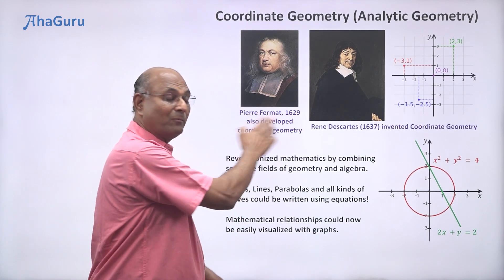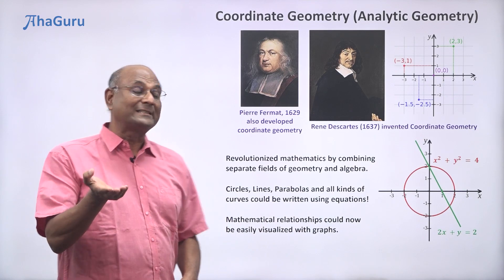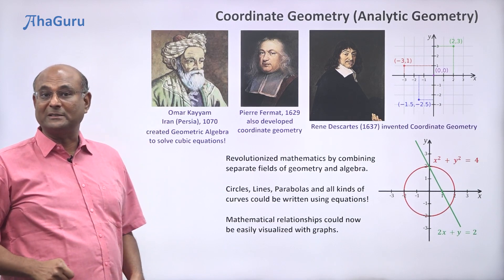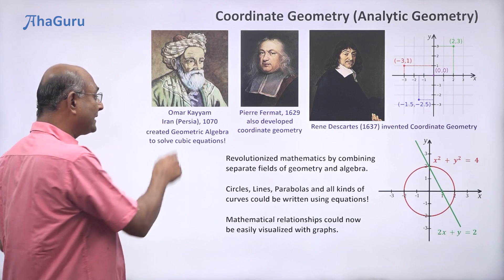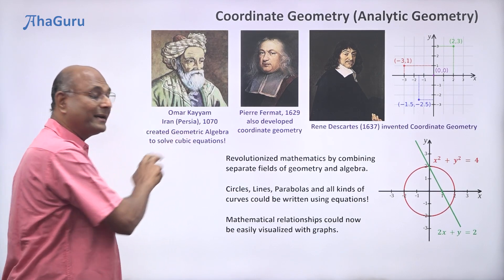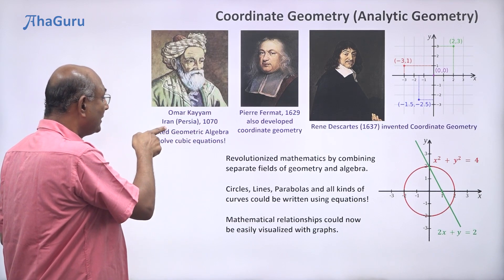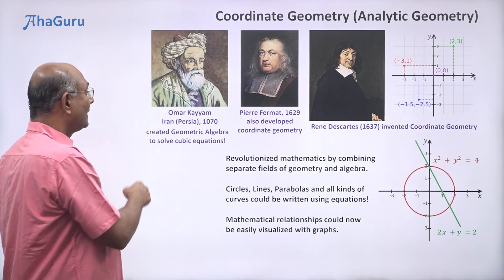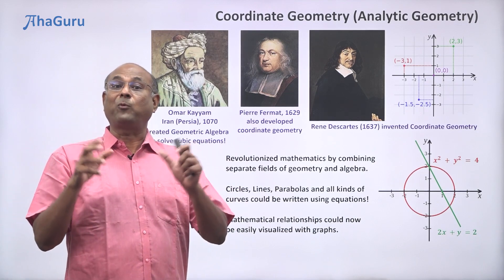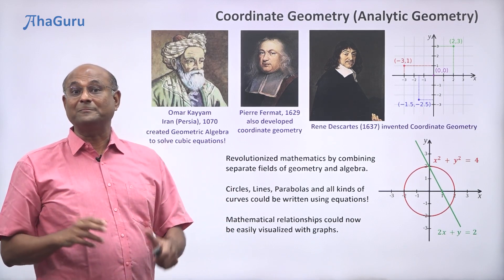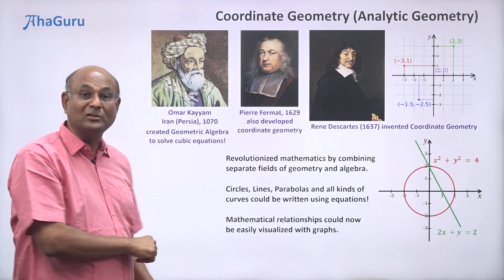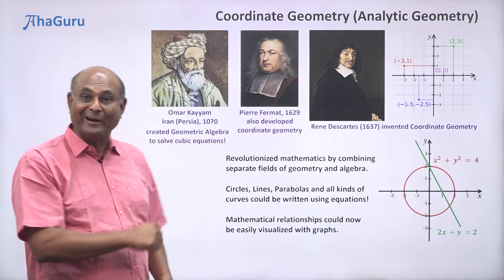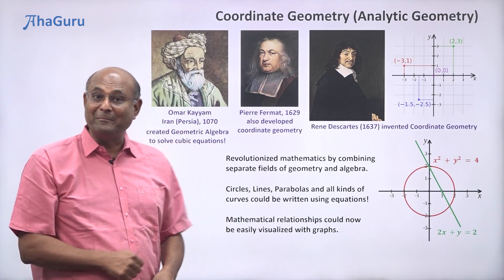But it turned out that if you look at both these people, they should not get the credit either, because 600 years before them, Omar Khayyam in Iran — today's Iran, at that time called Persia — in 1070 had created geometric algebra, which is essentially geometry plus algebra, what we call coordinate geometry today. He used this to solve cubic equations, solving algebraic equations using geometry. You might have heard of Omar Khayyam as a poet; he was a very famous poet but also a very famous mathematician. Why didn't he get the credit for coordinate geometry? Because most of this crediting was done by Europeans who preferred to credit Europeans, leaving out Indian and Arabian mathematicians.